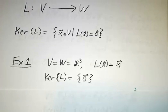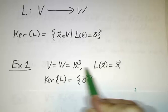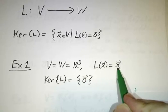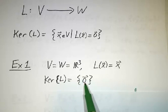So for example, let's suppose that we have V and W are both R³. The linear transformation is the identity map, L of x is just x. Well, the only way for that to be zero is if x is zero. So the kernel of L, in this case, consists of just the zero vector and nothing else.